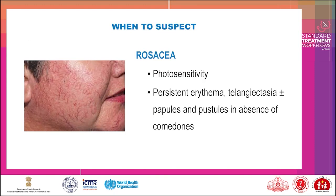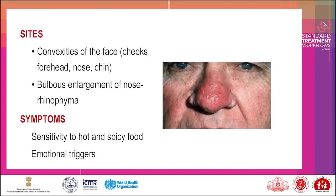When to suspect rosacea: telangiectasia (angiectasia), plus or minus papules and pustules in the absence of comedones. Sites: convexities of the face — cheeks, forehead, nose, chin. Bulbous enlargement of the nose (rhinophyma) may also be present.